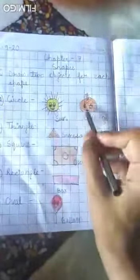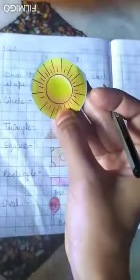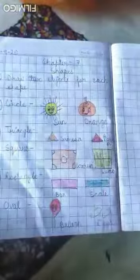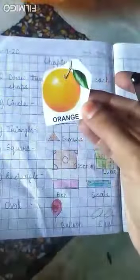I will show you the picture. Ye aagaya sun. What is the shape of the sun? Circle, circle, circle. What is the shape of the orange? Circle, circle, circle.